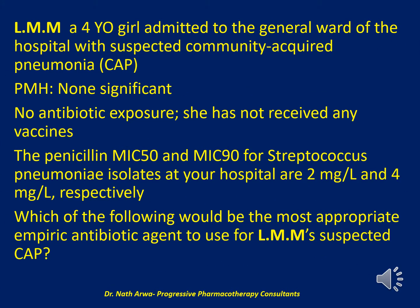The first question reads: LMM, a four-year-old girl, is admitted to the general pediatric ward of the hospital with suspected community-acquired pneumonia, CAP. She has no significant past medical history, no antibiotic exposure, and she has not received any vaccines. The penicillin MIC50 and MIC90 for Streptococcus pneumoniae isolates at your hospital are 2 mg per litre and 4 mg per litre, respectively. Which of the following would be the most appropriate empiric antibiotic agent to use for LMM's suspected CAP?